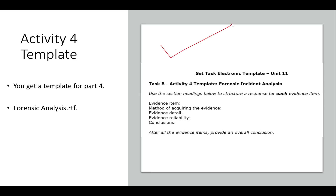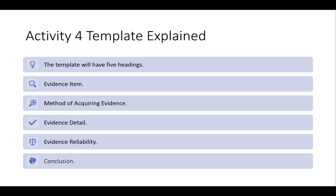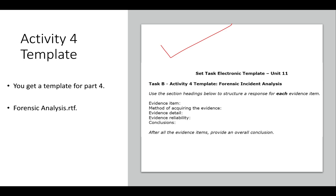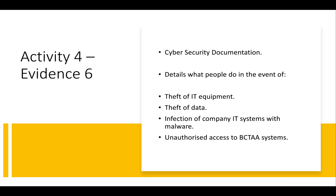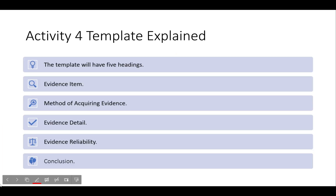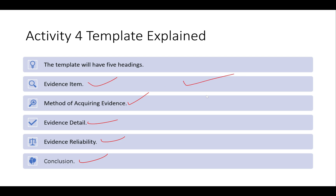The template you're given for Activity 4 has five headings: Evidence Item, Method of Acquiring Evidence, Evidence Detail, Evidence Reliability, and Conclusion. I would copy and paste this template for each piece of evidence — since there are six in the 2018 paper, I'd copy it five more times. For Evidence Item, label it as 'Evidence 1' and give the label used in the exam paper, such as 'Baljinder's account of events.'